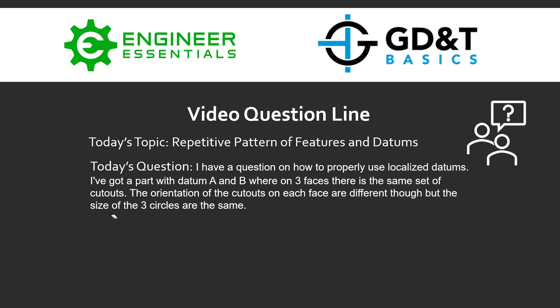Hey everybody, Jason here again with the GD&T basics video question line. Today's topic is the repetitive pattern of features and datums. The question that was submitted was rather long, but I've summarized it here. The main goal of the question is: I have a question on how to properly use localized datums. I've got a part with datum A and datum B, in other words a datum reference frame, where on three faces of this part there's the same set of cutouts.